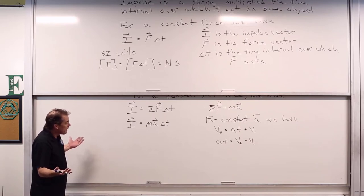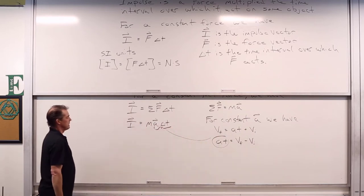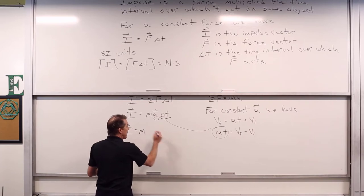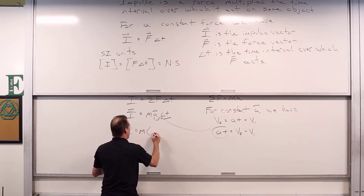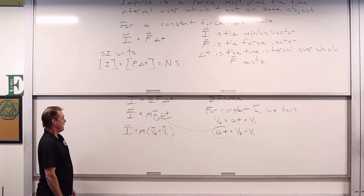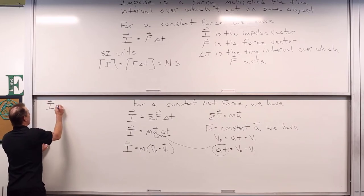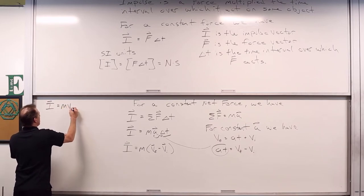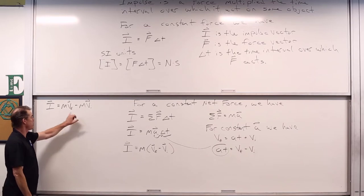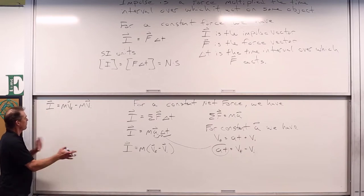So we can write I-hat equals m multiplied by (V-final-hat minus V-initial-hat). The impulse due to the net force produces a change in the object's velocity because the net force produces an acceleration. But more importantly, it's not just the velocity that changes — it's the mass times the velocity of the object.